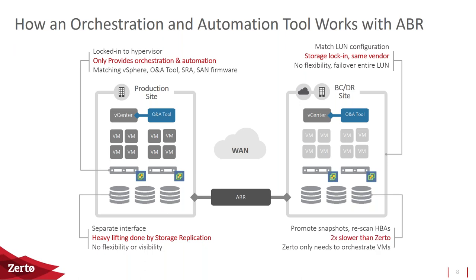Rescanning an HBA doesn't take long on its own, but if you have hosts with multiple HBAs and hundreds of hosts, that actually does take a long time. It's not 30 seconds to rescan everything and promote all the snapshots. Once that's done you start booting VMs. The reason array-based recovery is at least two times slower than Zerto is that process — if you take away all the HBA rescan and snapshot promotion work and just start booting VMs, that's where Zerto comes in.